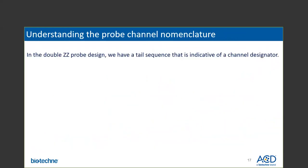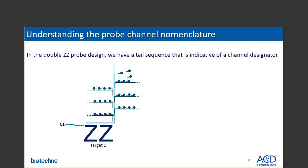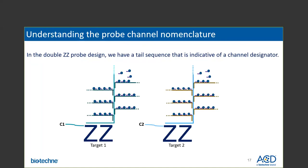In order to detect multiple mRNAs simultaneously, multiple amplification trees must be built, and we must ensure specificity. The specificity is ensured by adding a unique tail sequence to the probes. In the double-Z probe design, we add a tail sequence that is indicative of a channel designator. For example, a C1 probe has a specific C1 tail sequence that will only allow binding of the subsequent C1 pre-amplifier, amplifier and label probe molecules. Similarly, a C2 probe will have a separate and unique tail sequence, and so on. C1 and C2 are the channel designators.